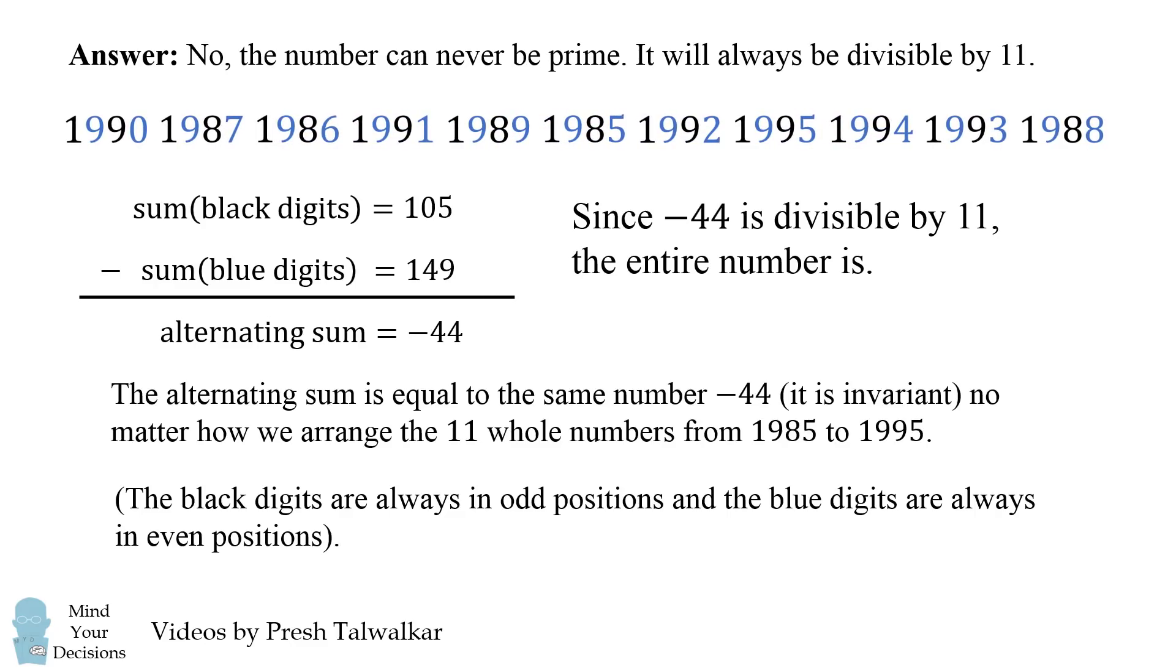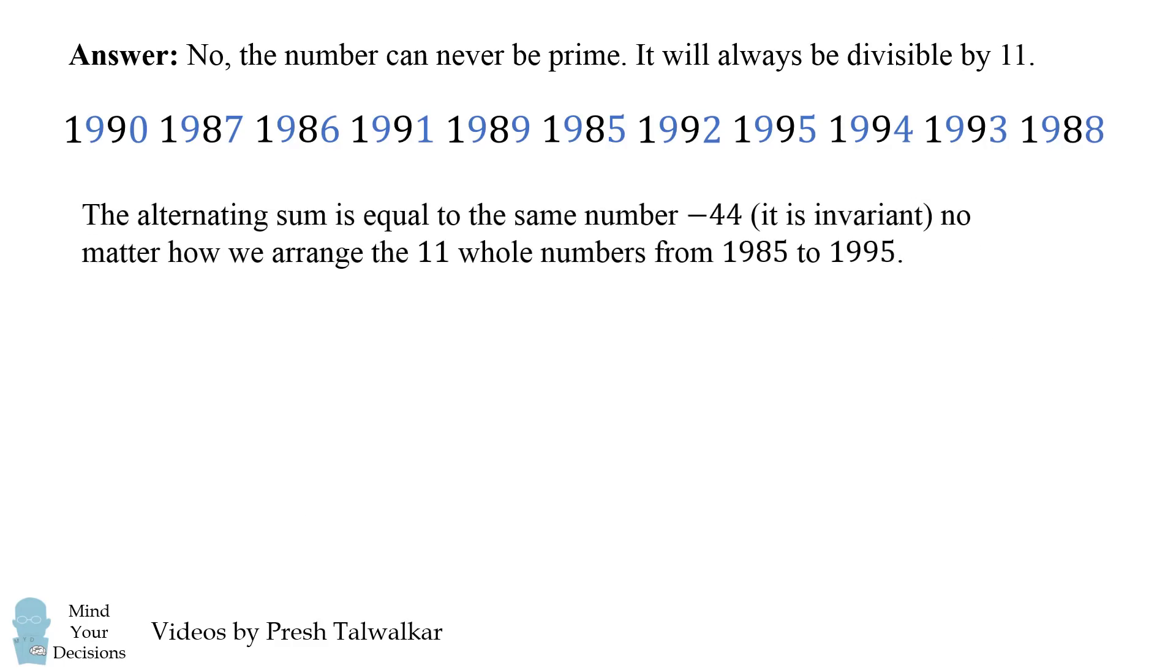Because each number has 4 digits, no matter how we rearrange them, we're always going to have the black digits in odd positions, and the blue digits in even positions. Therefore, the alternating sum will always be negative 44, and therefore the resulting number will always be divisible by 11.